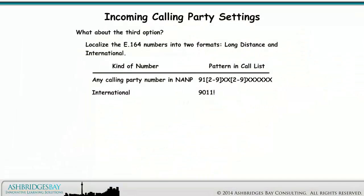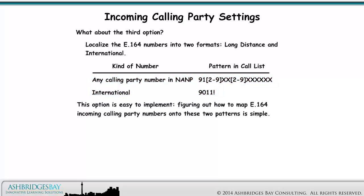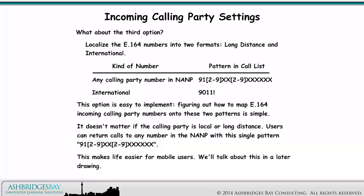Option 3: localize the E.164 numbers into just two formats — long distance and international. We'll see just these two kinds of numbers in call lists. This option is easy to implement. Figuring out how to map E.164 incoming calling party numbers onto these two patterns is simple. It doesn't matter if the calling party is local or long distance — users can return calls to any number in the NANP with this single pattern. This makes life easier for mobile users.